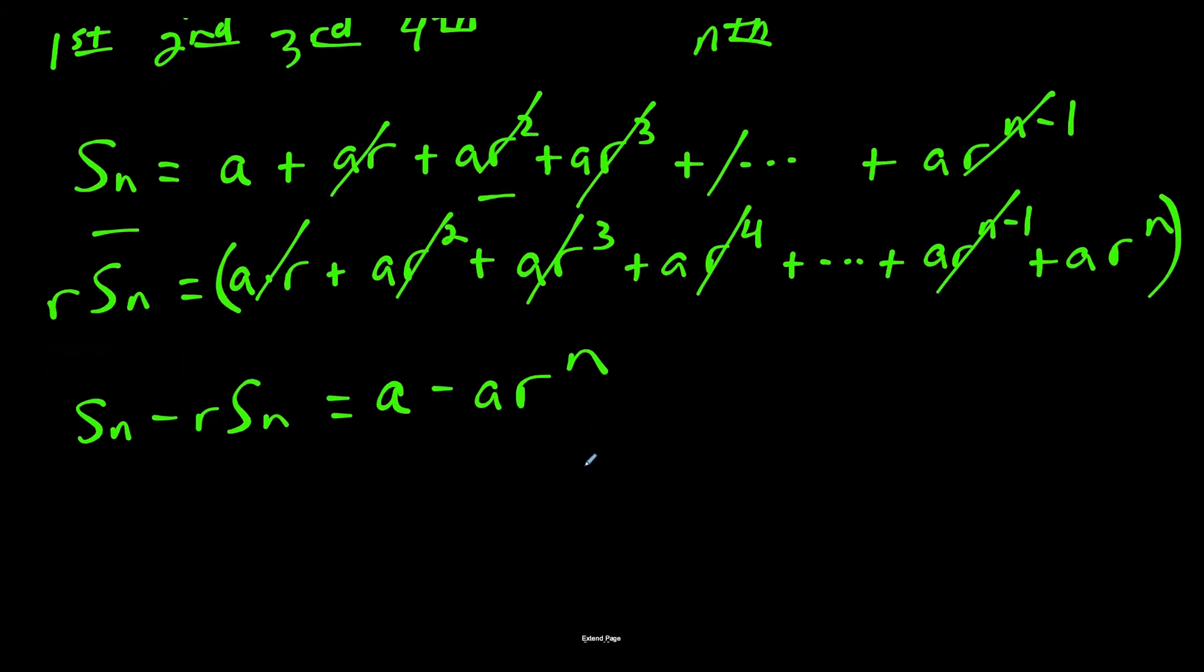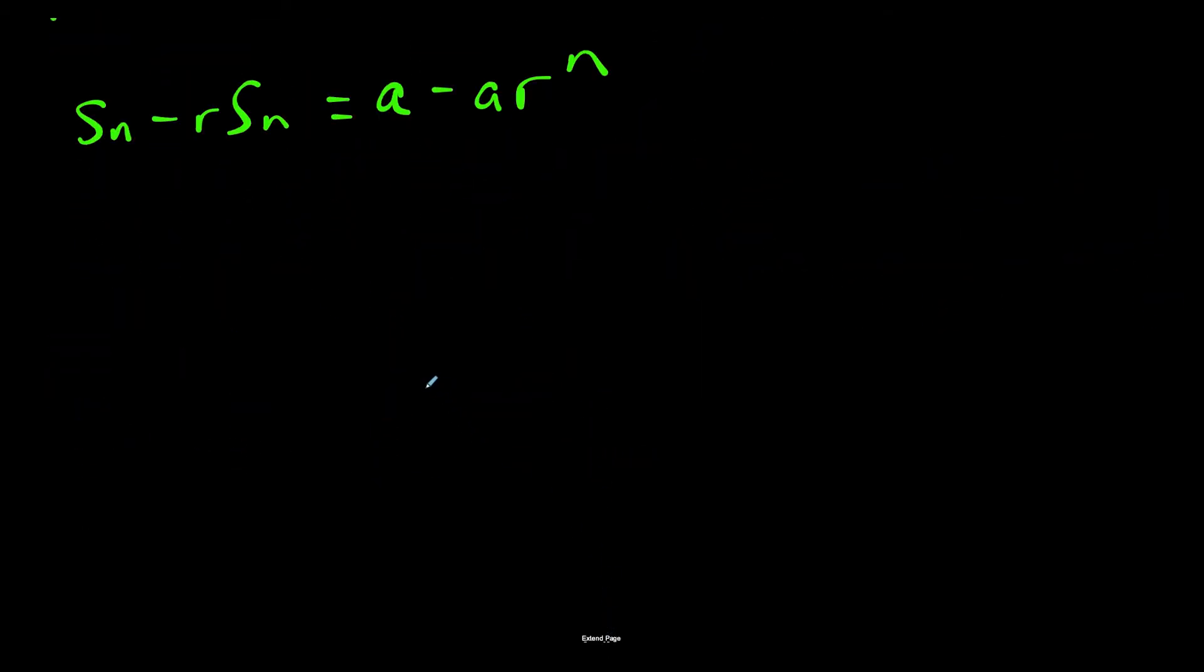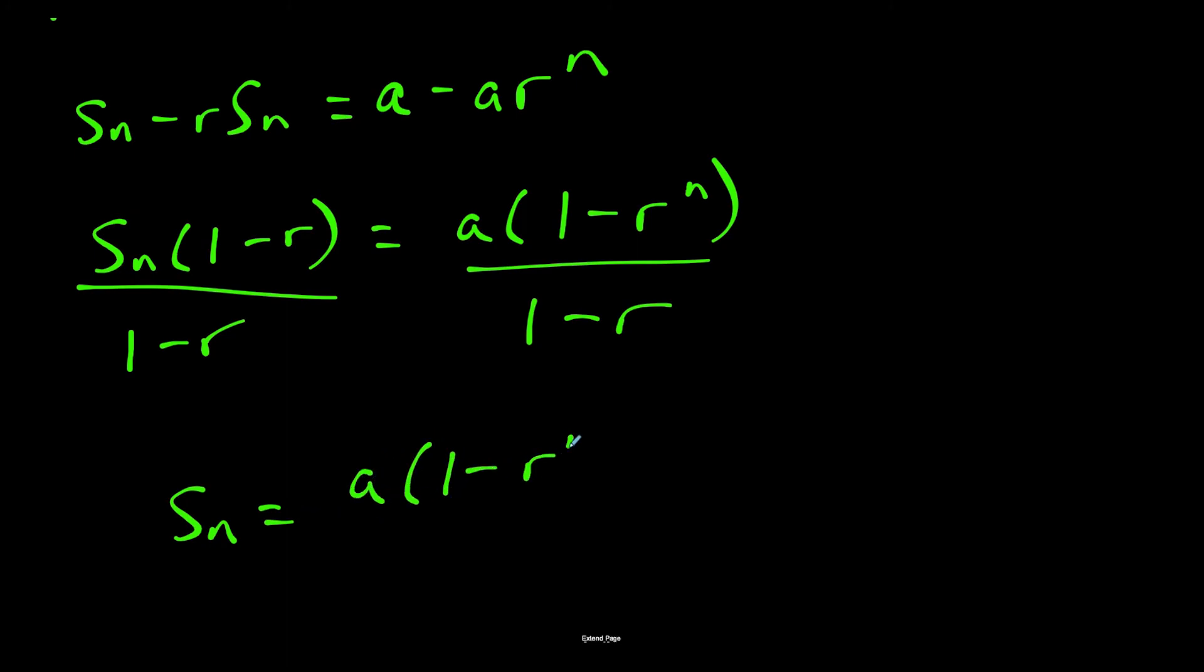So now the goal here is to come up with an equation for s sub n. So we're going to factor out s sub n, and we're left with 1 minus r. And on the right side, we can factor out an a, and we're left with 1 minus r to the n. So then all we have to do to solve for s sub n is divide by 1 minus r. And here's our formula, s sub n equals a times 1 minus r to the n over 1 minus r. The sum of the first n terms of our geometric sequence can be found using this formula.